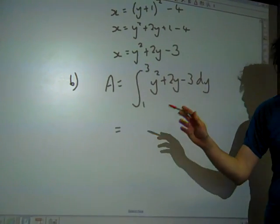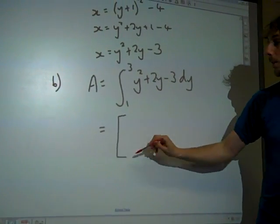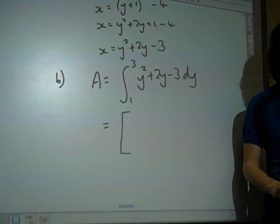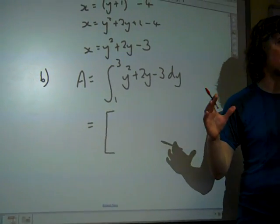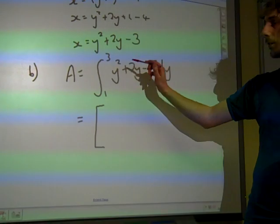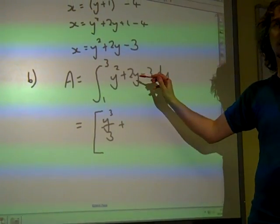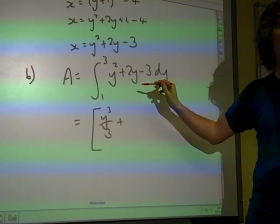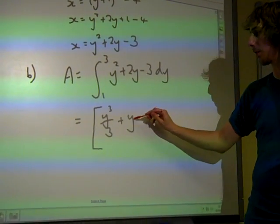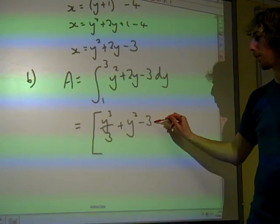Now remember, when you've got limits on your integral, we're not going to put plus c in there. We're going to keep it inside some brackets and deal with the numbers in a moment. y² is going to go to y³/3. 2y, that's 2y²/2, so the 2s will cancel out. That's y². Minus 3y.